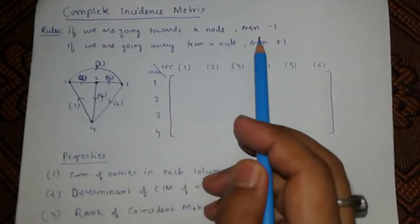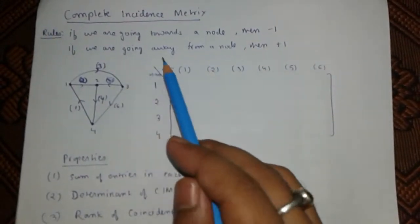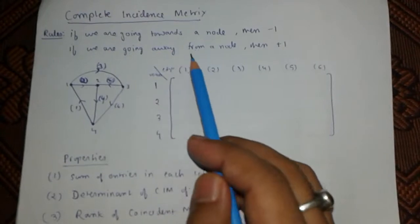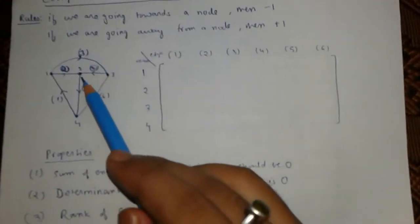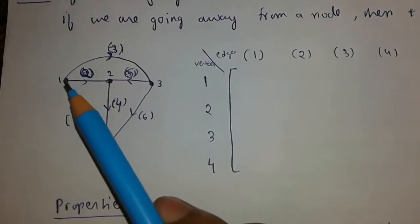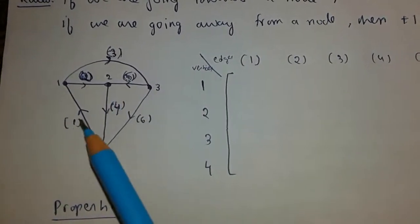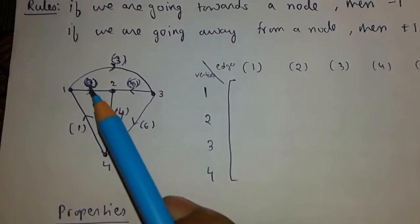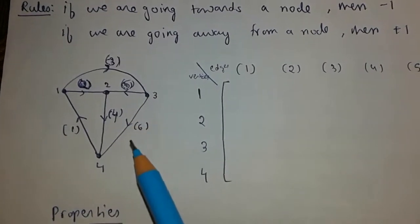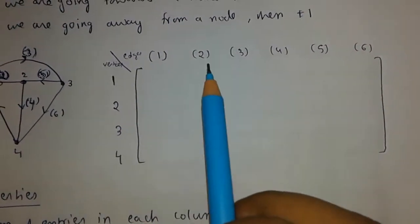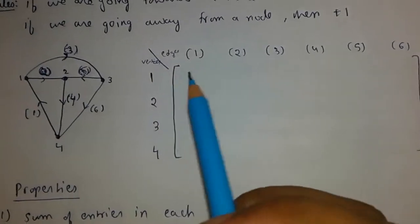If we are going towards a node, we will take minus one. If we are going away from that node, we will take plus one. I have taken four vertices — one, two, three, four — and their edges one, two, three, four, five, six respectively. This is our incidence matrix.